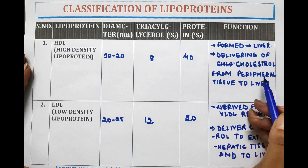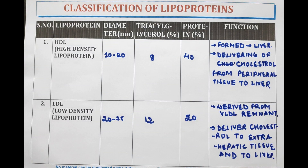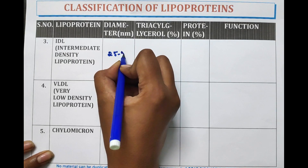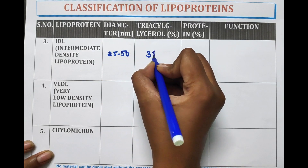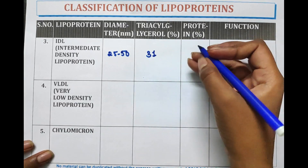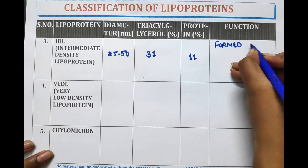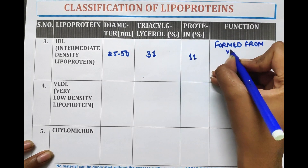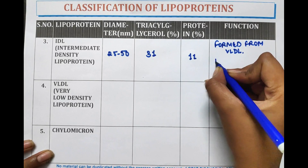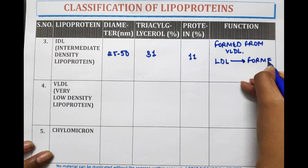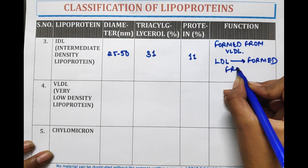HDL transfers cholesterol from peripheral tissue to the liver, while LDL transfers cholesterol to extra-hepatic tissue and to the liver. IDL — intermediate density lipoprotein — has a diameter of 25 to 50 nanometers, with triacylglycerol at 31% and protein at 11%. IDL is formed from VLDL, and LDL is formed from IDL.